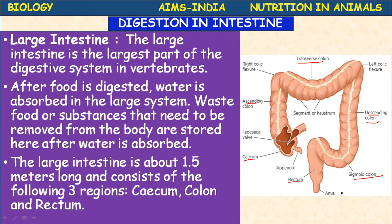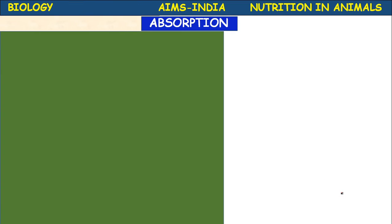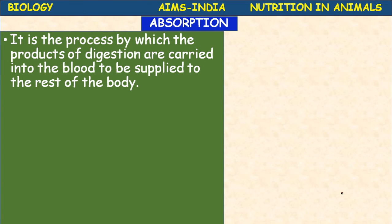With the help of muscular action, the undigested material is pushed out through the anus — this is called defecation. As soon as digestion is completed, the process of absorption begins. Absorption is the process by which the products of digestion are carried into the blood to be supplied to the rest of the body.